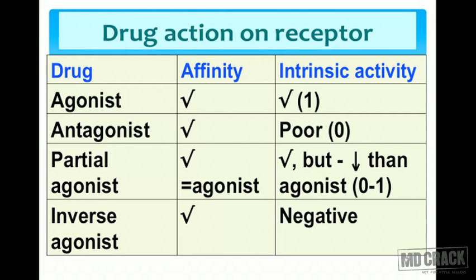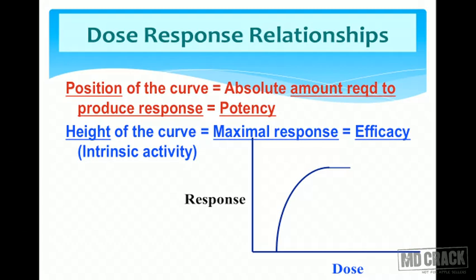Based on affinity and intrinsic activity, we have four types of drugs interacting with a receptor. An agonist has both affinity and intrinsic activity (set as 1, or 100%). An antagonist has affinity but intrinsic activity of zero. A partial agonist has affinity equal to an agonist but intrinsic activity between zero and one. An inverse agonist has affinity but negative intrinsic activity.